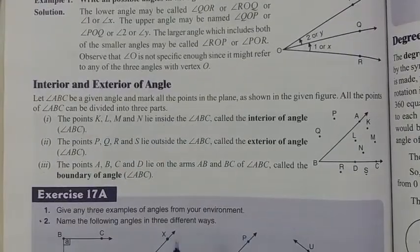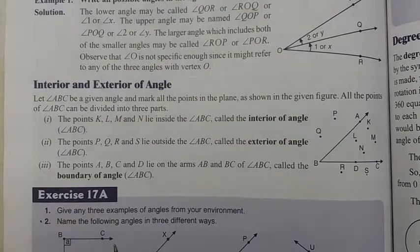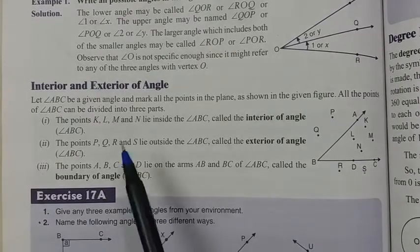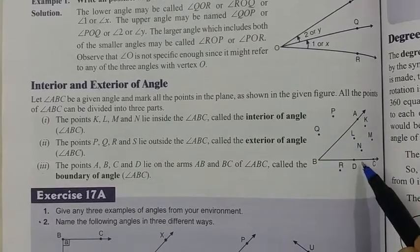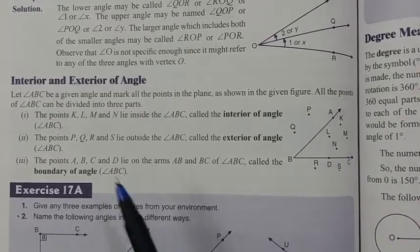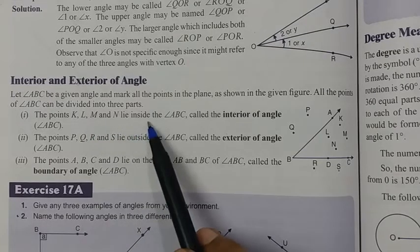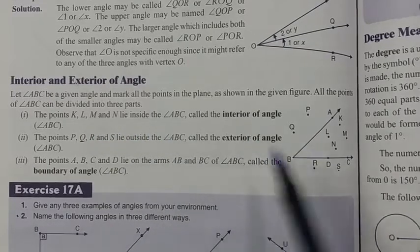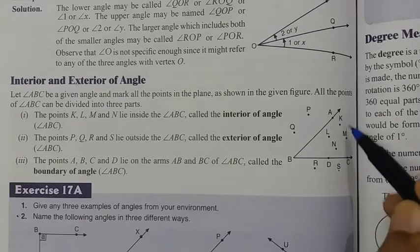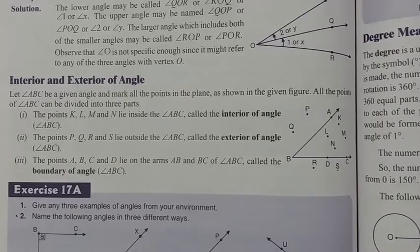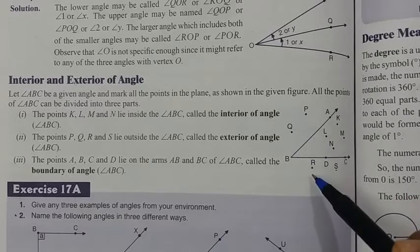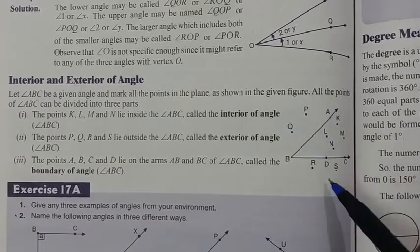Now, interior and exterior of angles. Consider angle ABC. In this figure, some points are given: P, Q, R, S, L, M, N, K. The points K, L, M, and N lie inside angle ABC — these are called the interior of the angle. Points P, Q, R, and S are outside the angle — these points are the exterior of the angle.